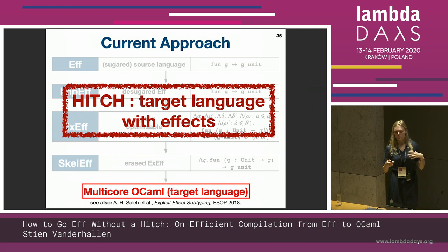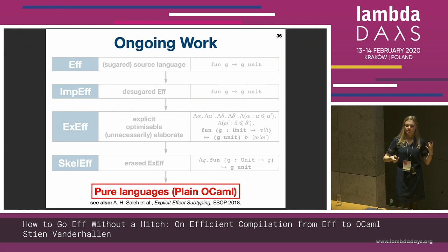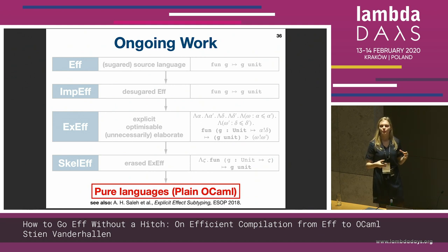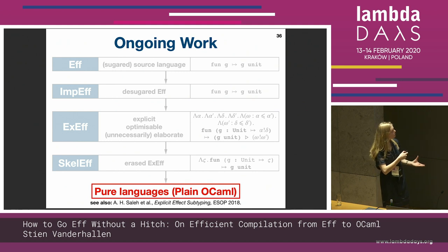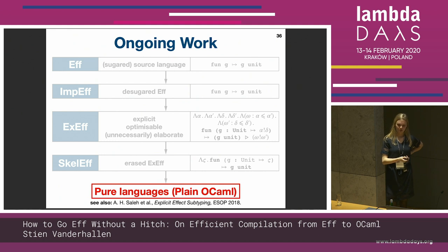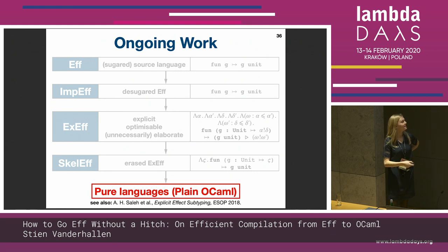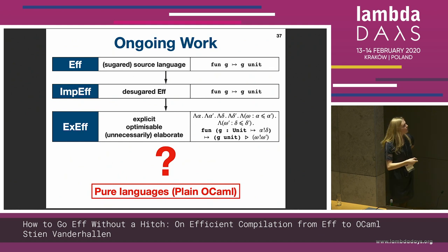And to be as general as possible we would also like a backend that translates to pure languages or pure fragments of languages like plain OCaml or even Haskell in the future, which would make the F compiler more general. But of course this is quite a difficult problem because F has effects and pure languages don't, making this a non-trivial problem.